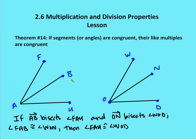So if I have AB, which bisects angle FAU, I know that angle FAB and angle BAU are congruent. And then if I have ray ON, which bisects angle WOD, then I know that angle WON and angle NOD are also congruent. So if it's given that angle FAB is congruent to angle WON, then I know that the entire angle FAU,